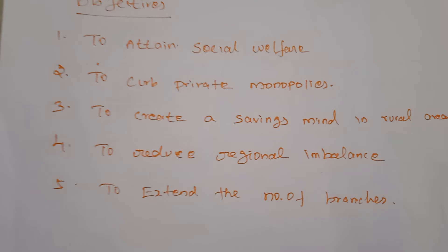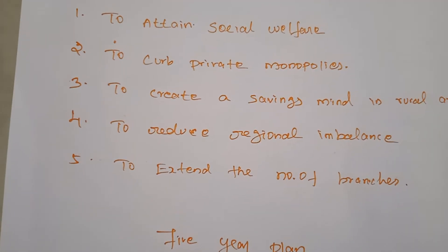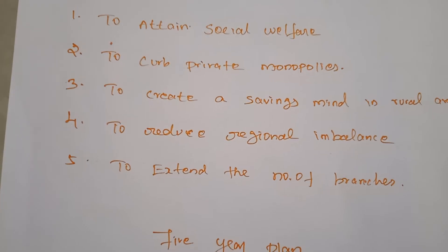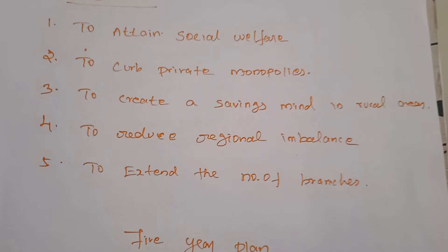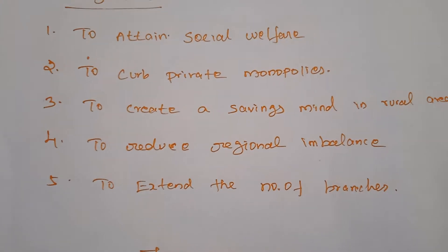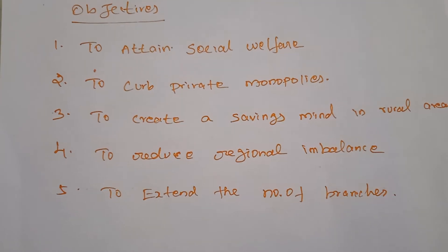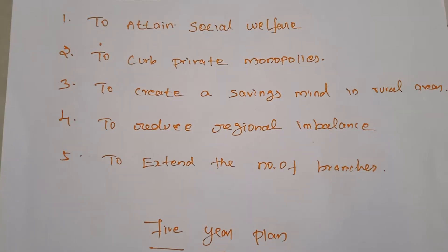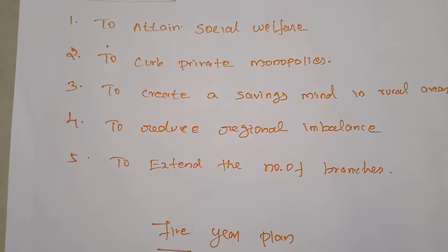The governments needed more financial facilities to achieve their economic goals, but before independence all the banks were in the hands of the private sector. The private sector banks did not help the government in achieving their economic goals. So the government decided to nationalize 14 major commercial banks on 19 July 1969.